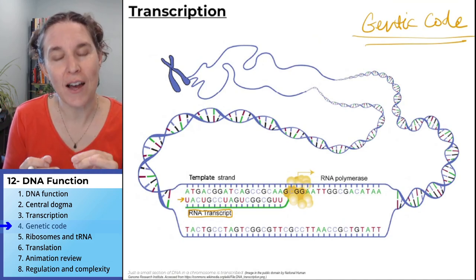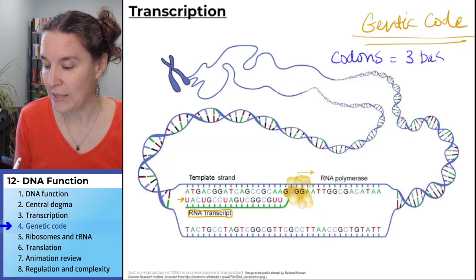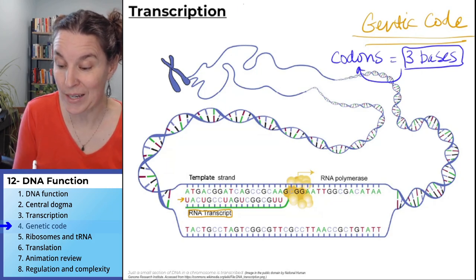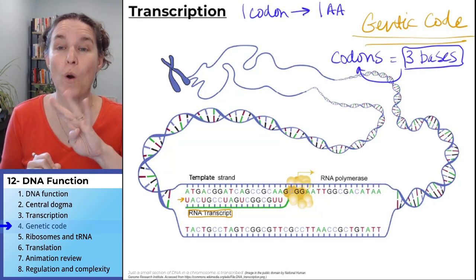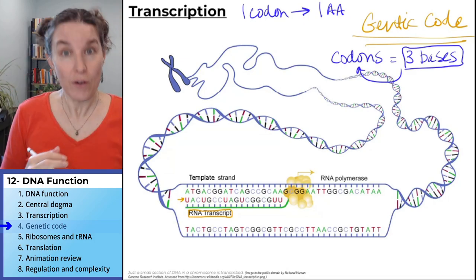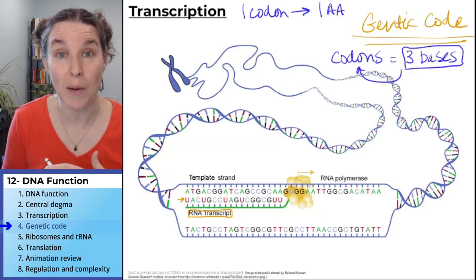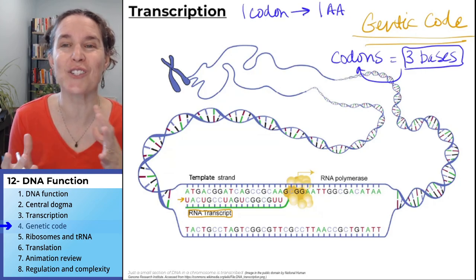So they figured out that the genetic code is based on codons, which are three bases — three nitrogen bases make up a codon, and one codon codes for one amino acid. If you have four possible bases in groups of three, there are 64 possible combinations, which is way more than the 20 amino acids we're coding for, which means there's some overlap.